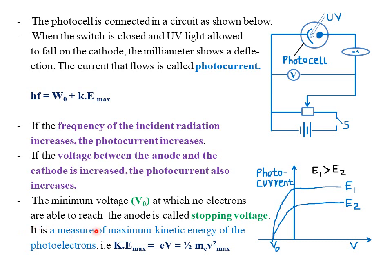The stopping voltage is a measure of the maximum kinetic energy of the photoelectrons. At the stopping voltage, maximum kinetic energy equals eV₀, which equals one-half m_e v²_max. The two graphs indicate various values of photocurrent for different materials, where the energy E1 of the first material is always greater than the energy E2 of the second material.